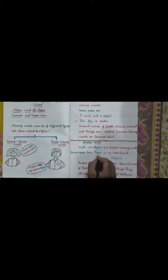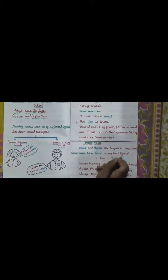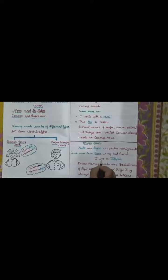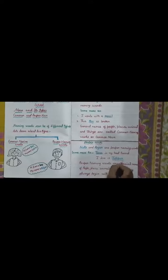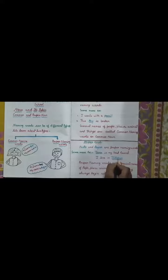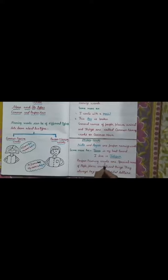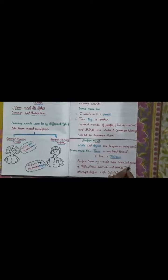The second type is proper noun. Neeta and Arjun are proper naming words. Some more examples: Tina is my best friend — Tina is a proper name. I live in Jodhpur — Jodhpur is a name of a proper place. So, proper naming words are special names of people, places, animals and things. They always begin with capital letters.